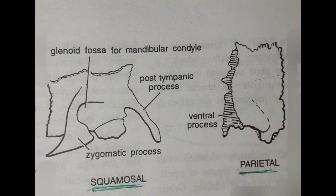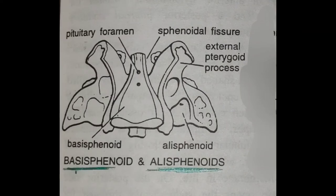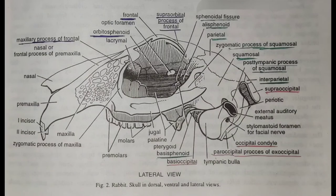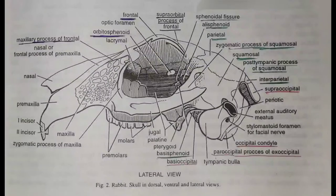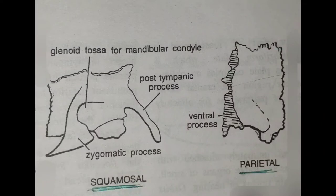The dorsal roof of the parietal region is formed of parietal bones. An interparietal occurs between the two parietals and supraoccipitals. The floor of the parietal region is formed of basisphenoid. The dorsal surface of the basisphenoid bears a depression known as sella turcica, which contains the pituitary gland. The lateral sides are formed of alisphenoids, and a part of the alisphenoids forms the base of the orbit.